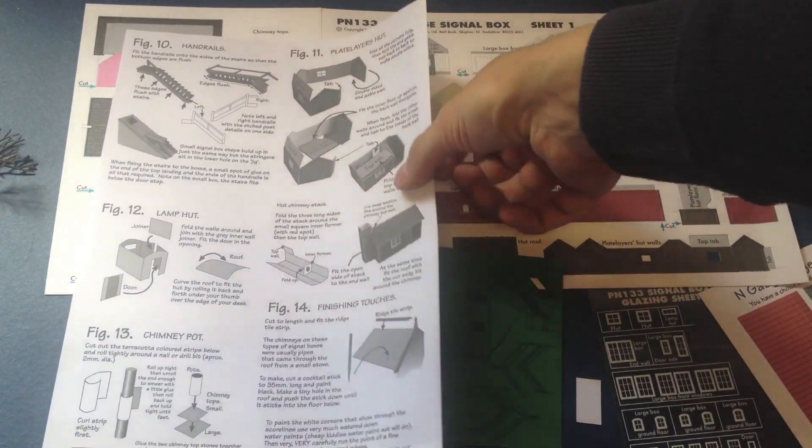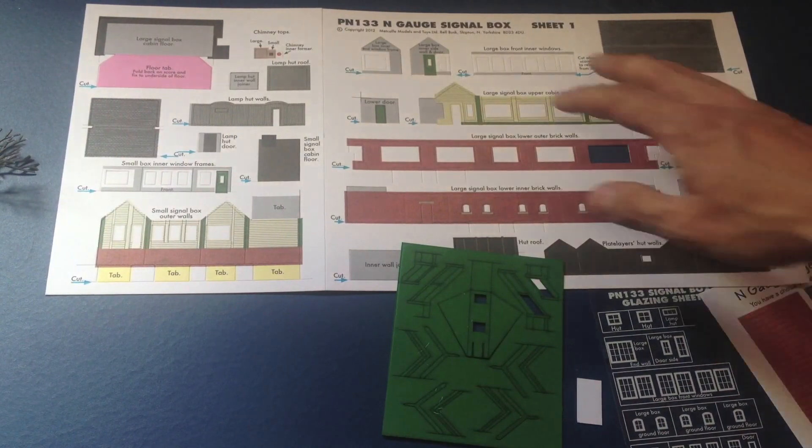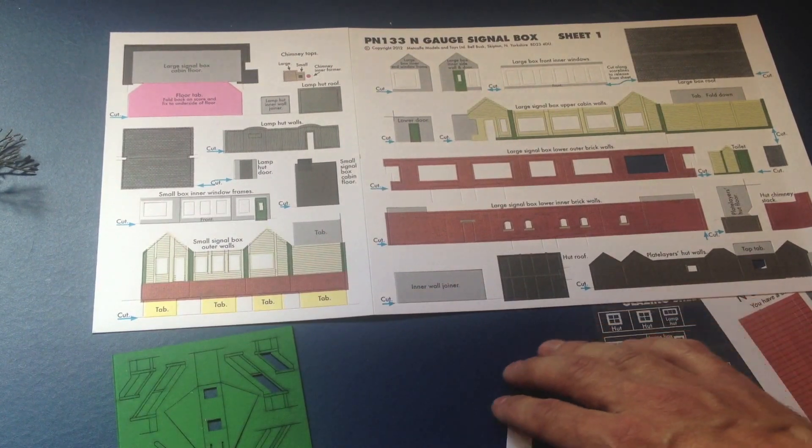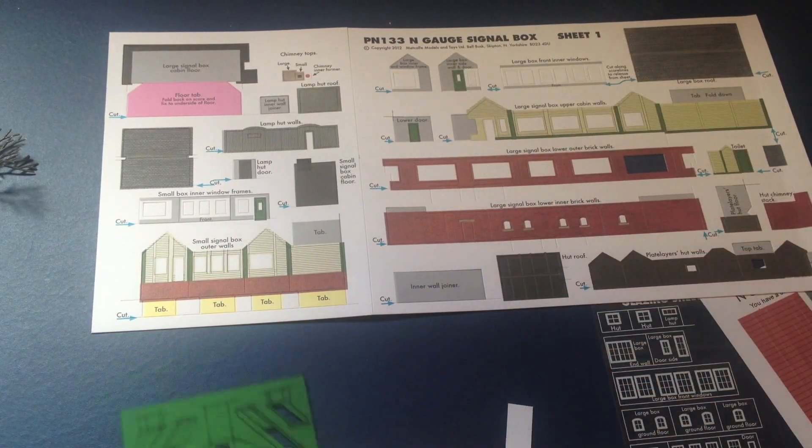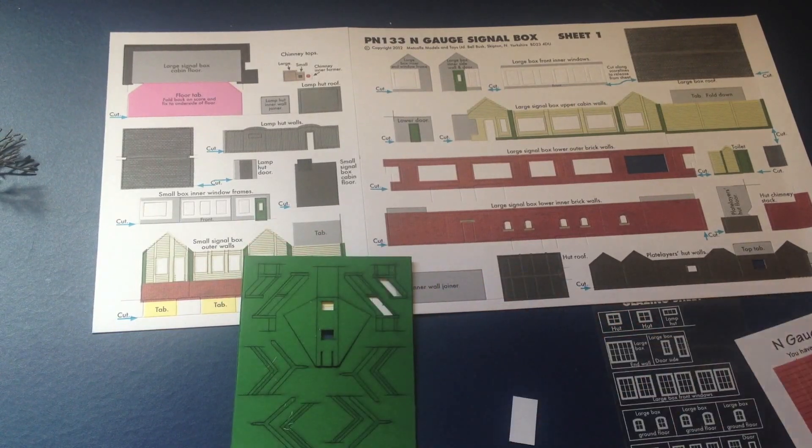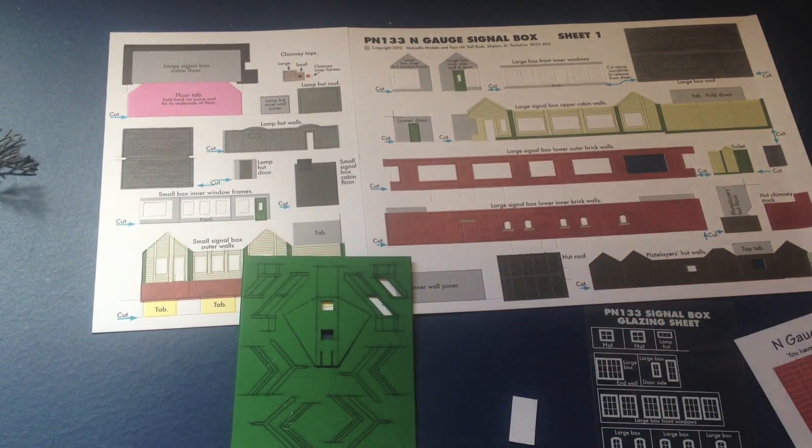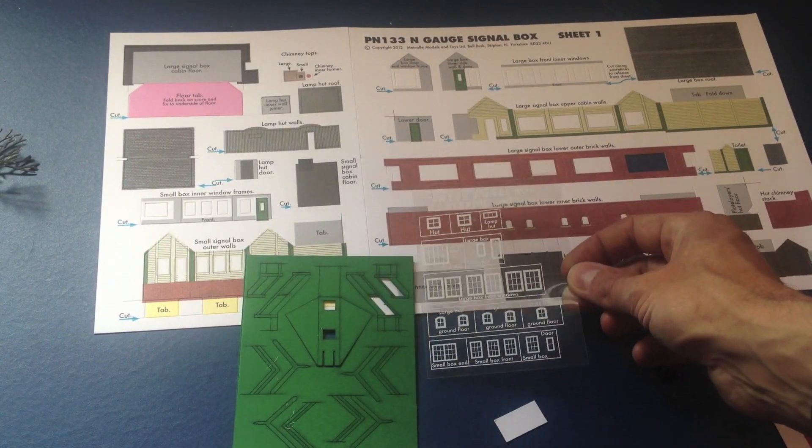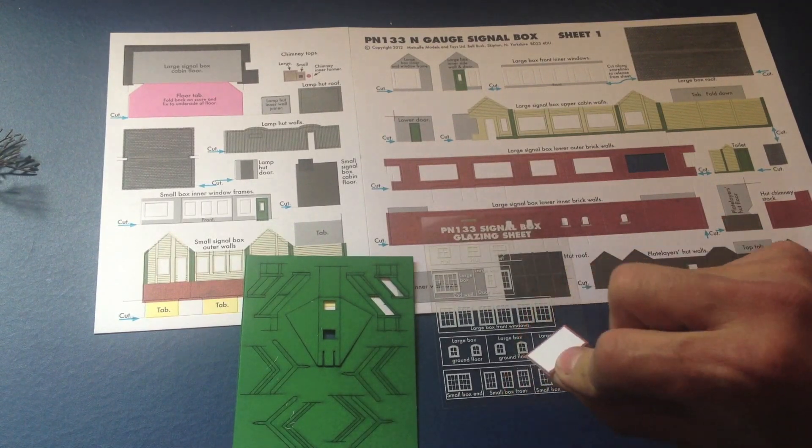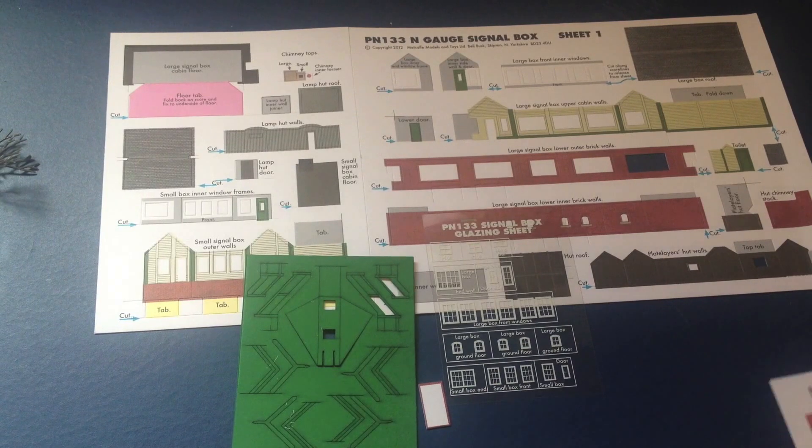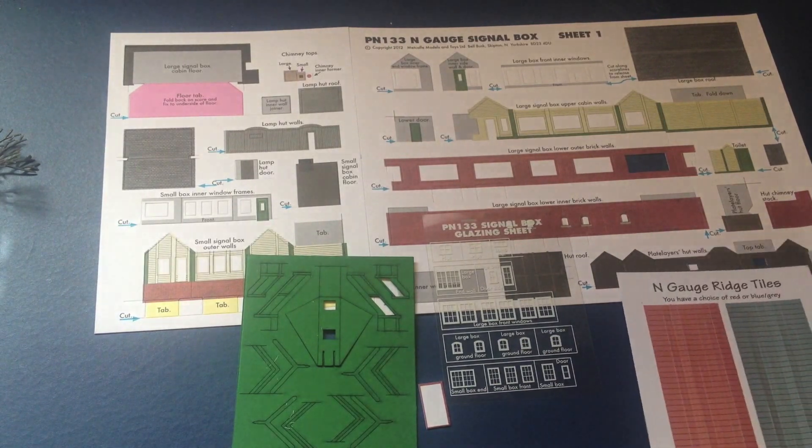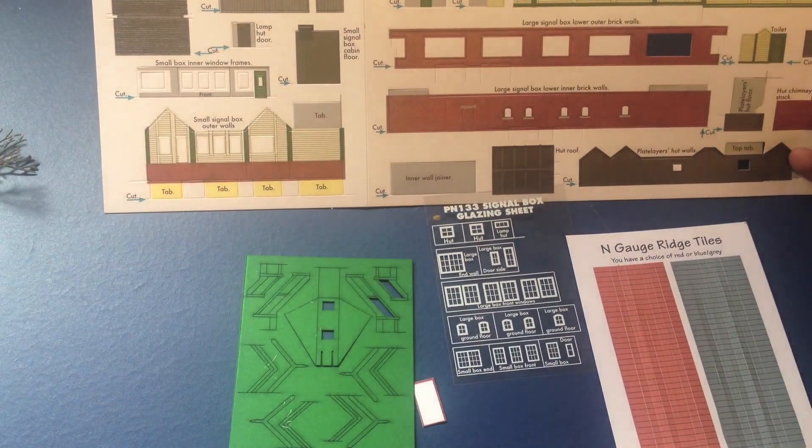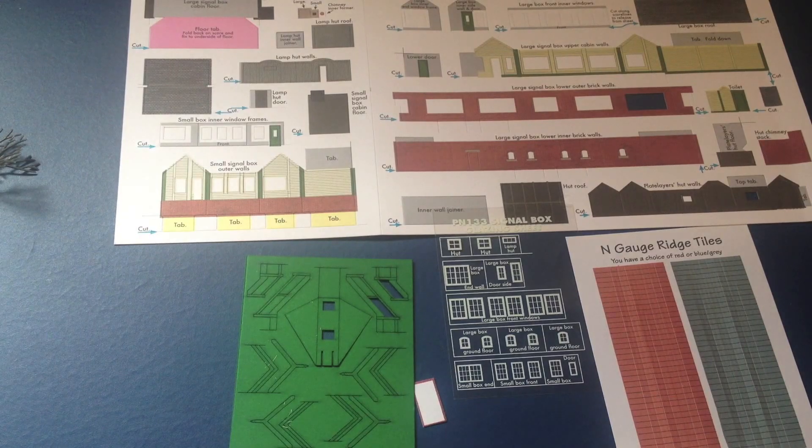So let's have a look at the bits and I will put it together and let you know how I got on. So obviously we've got the main exterior bits here and we've got some base layers there, a glazing sheet for the windows, and that looks like the foundations for one of the huts. And some ridge tiles. So that's the kit. Let's go and build it.